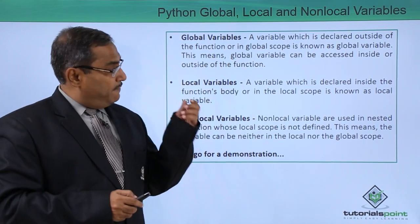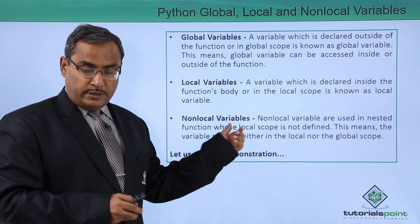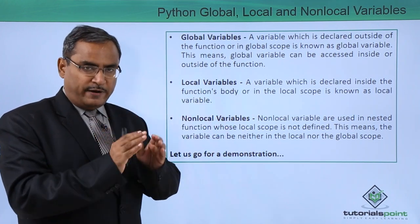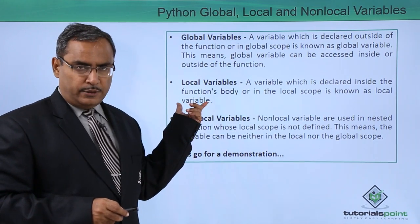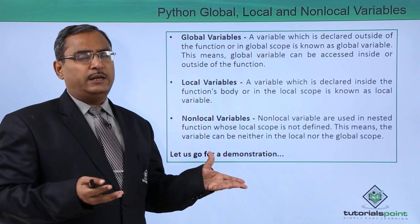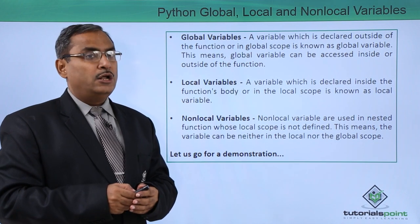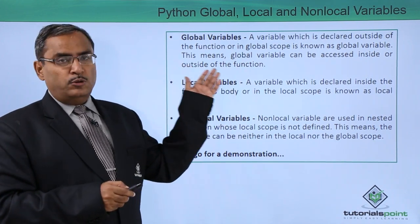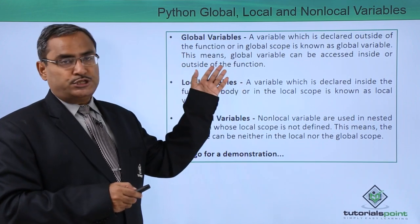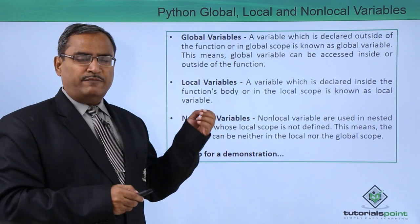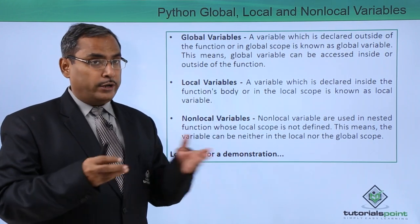Local variables: a variable which is defined or declared inside the function's body, that means within the function body or in the local scope, is called a local variable. So in case of a global variable, the variable is declared outside of the function in the global scope, whereas a local variable is declared within the function or in the local scope.